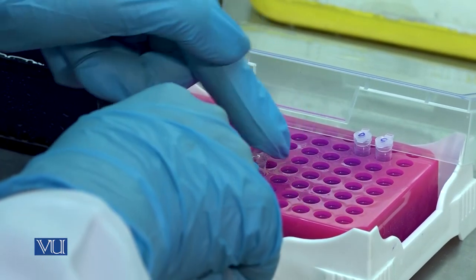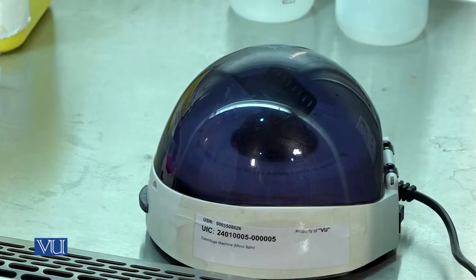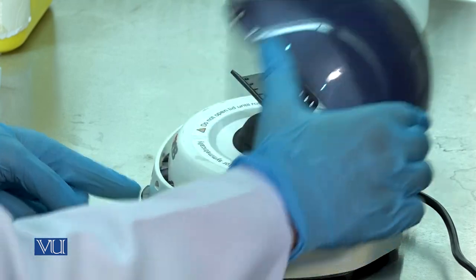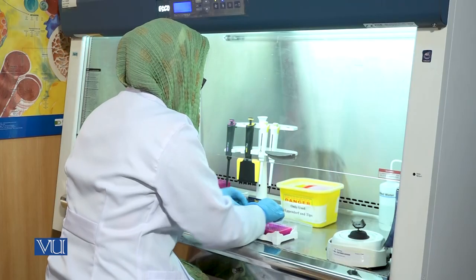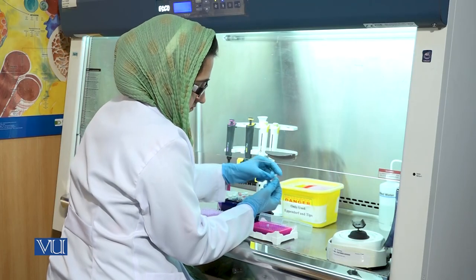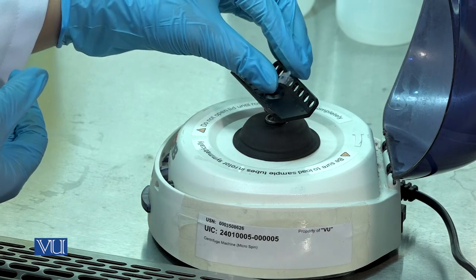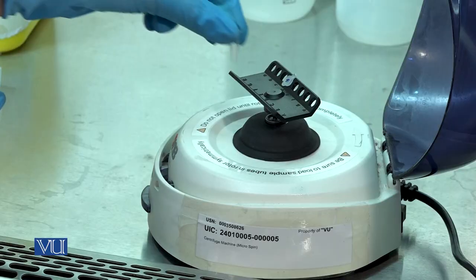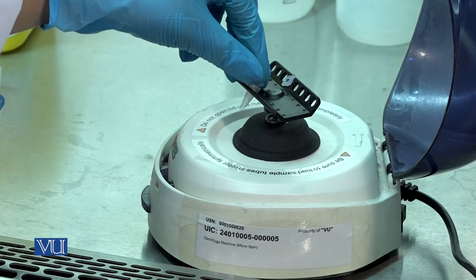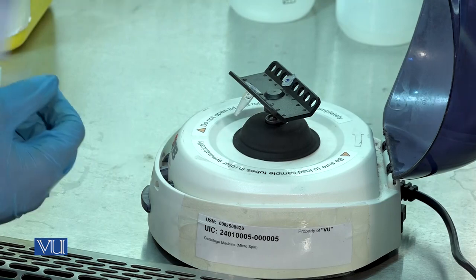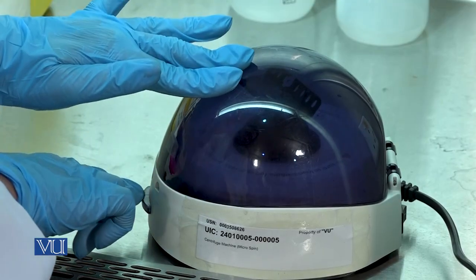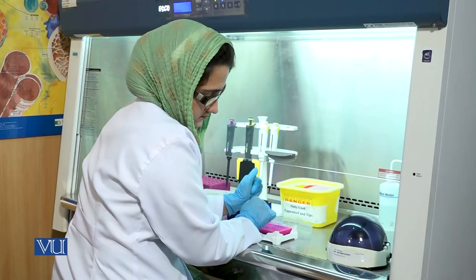Close the lids of the PCR tubes. Spin the PCR tubes in the centrifuge for a few seconds.